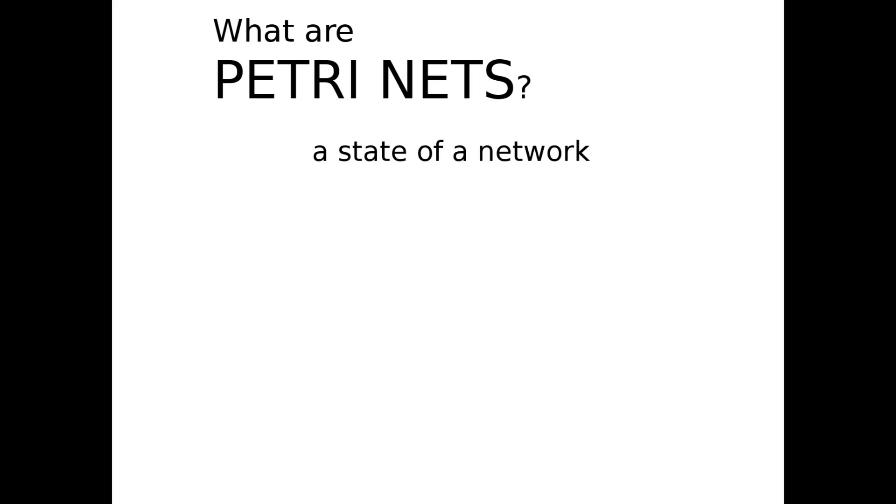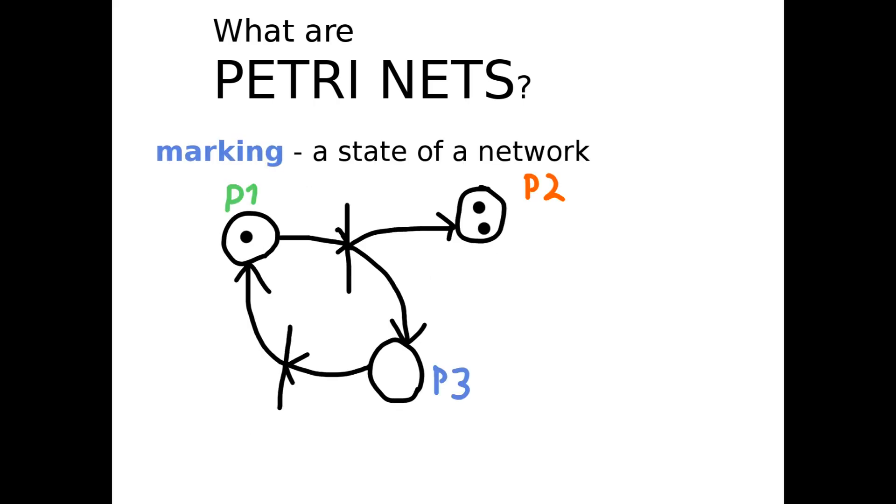A state of a network is called a marking. Marking is the number of tokens on each place in the network.